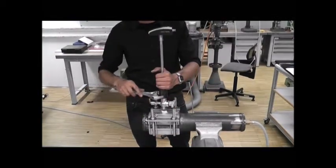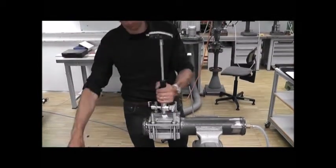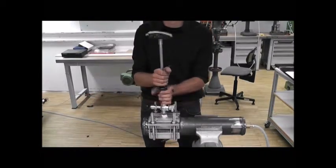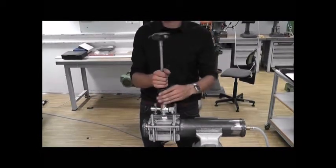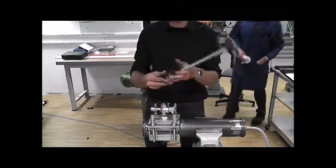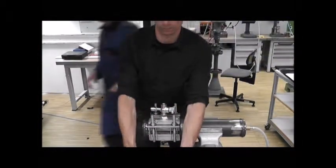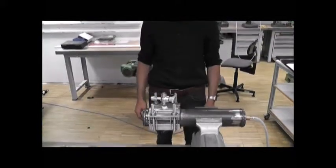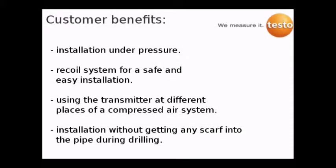To uninstall the 6448, you just have to close the ball valve and open the screw of the transmitter. After the uninstallation of the transmitter, you also can use this transmitter on another pipe of the compressed air system where the tapping clamp is installed. Thank you for your attention. If you have further questions due to the installation of the 6448, please do not hesitate to contact our application service.